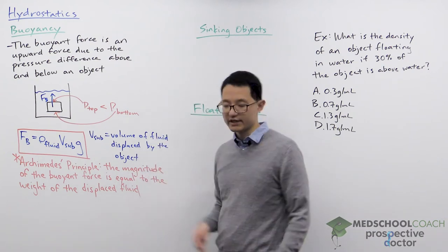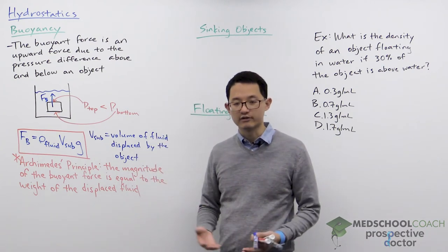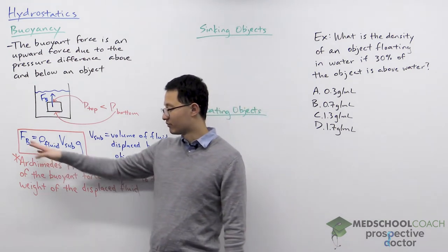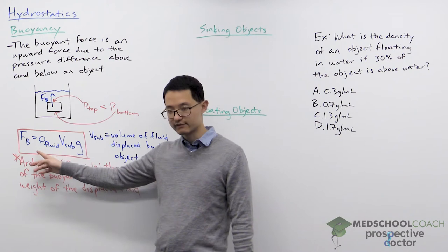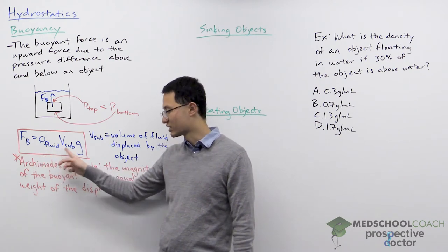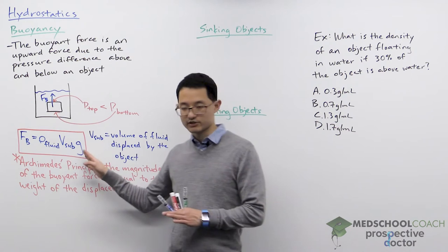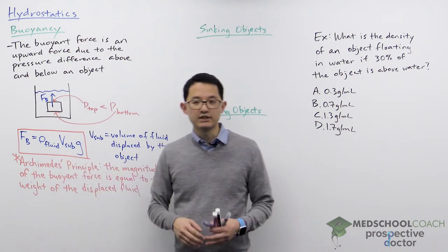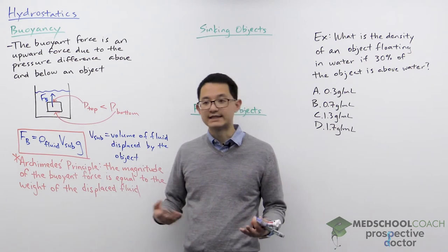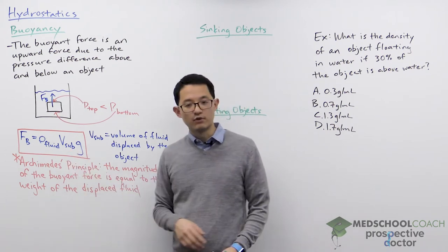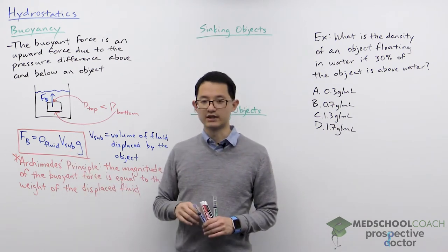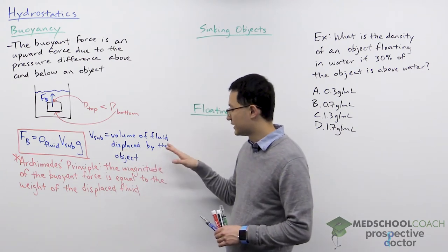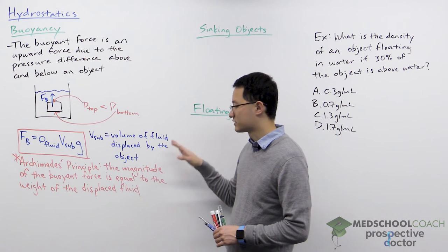For the MCAT, you are expected to calculate the buoyant force. The equation is: buoyant force equals the density of the fluid times the volume submerged times gravity. Gravity is straightforward — 10 meters per second squared. The density of the fluid is whatever the fluid's density is. The volume submerged is a little trickier.